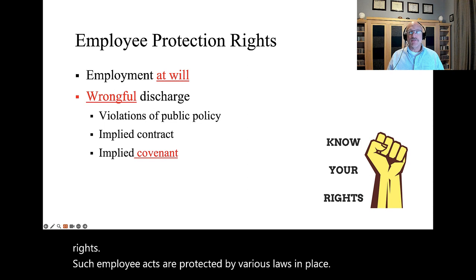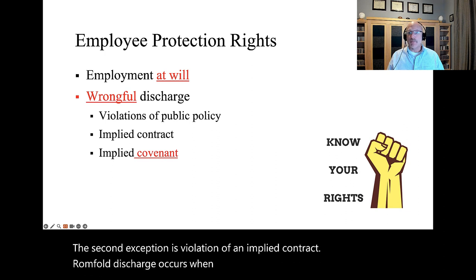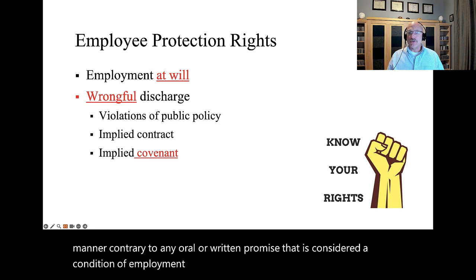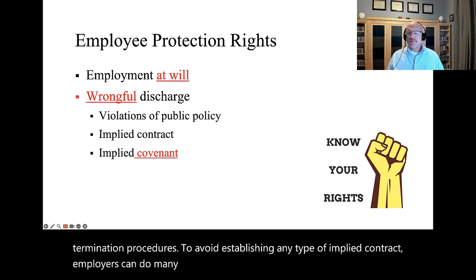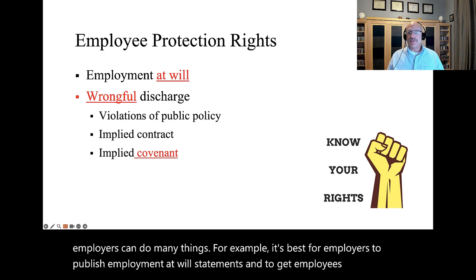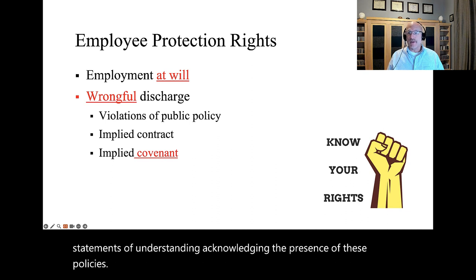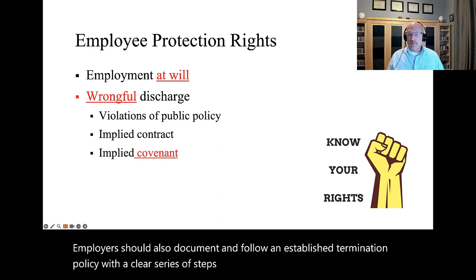The second exception is violation of an implied contract. Wrongful discharge occurs when an employer terminates an employee in a manner contrary to any oral or written promise that is considered a condition of employment. These promises may relate to job security or to termination procedures. To avoid establishing any type of implied contract, employers should publish employment at will statements and get employees to sign statements of understanding acknowledging the presence of these policies. Employers should also document and follow an established termination policy with a clear series of steps, warnings, and performance improvement opportunities.